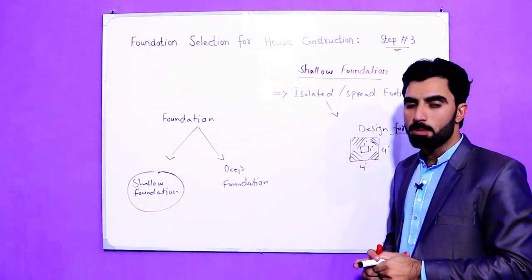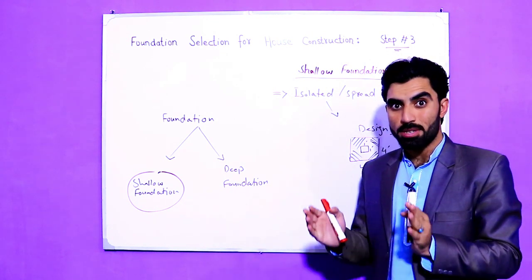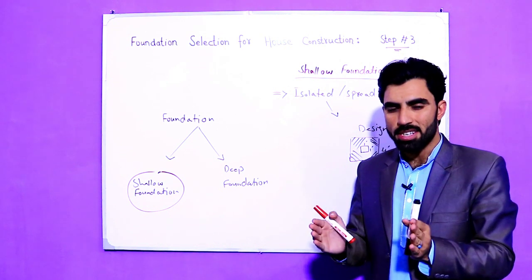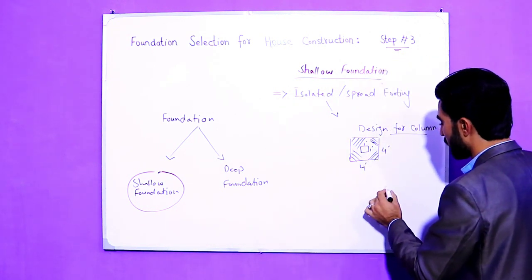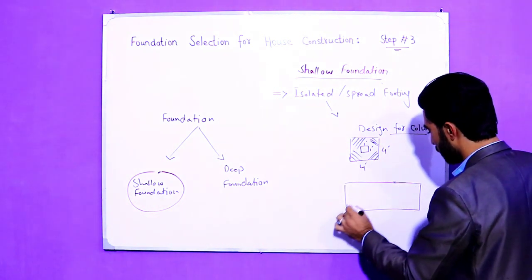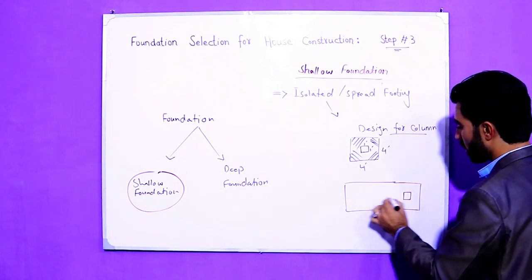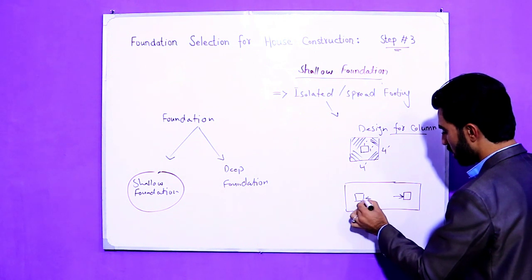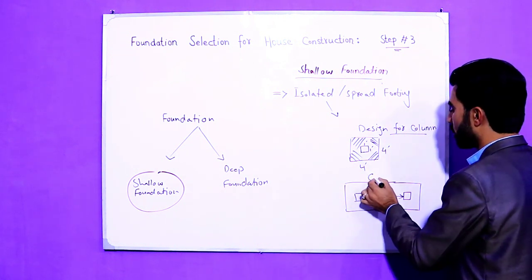If the distance between two columns is less, we can also design a combined footing. As you can see, this is a combined footing — when the column spacing is small, we use combined footing instead of isolated footing.